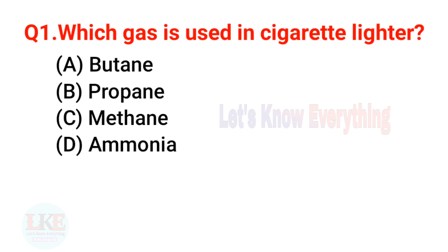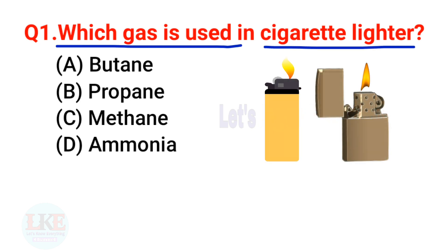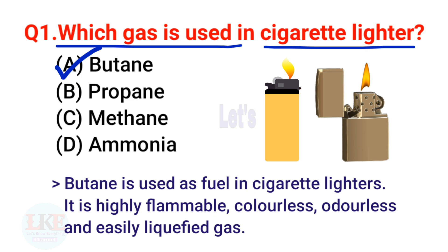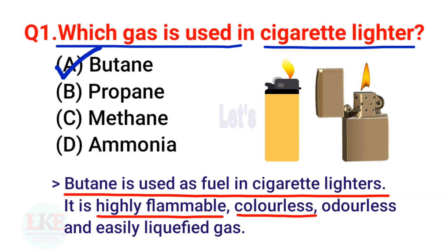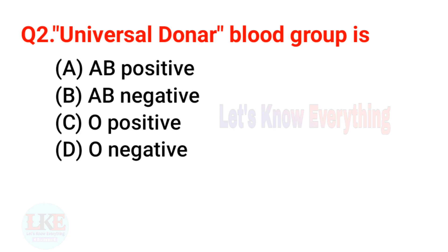Question 1: Which gas is used in a cigarette lighter? A) Butane, B) Propane, C) Methane, D) Ammonia. The right answer is option A, Butane. Butane is used as fuel in cigarette lighters. It is a highly flammable, colorless, odorless, and easily liquefied gas.